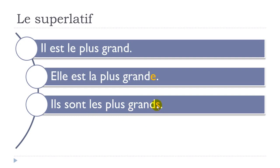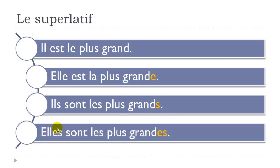For 'the least': il est le moins grand, elle est la moins grande, ils sont les moins grands, elles sont les moins grandes. Exactly the same rule as le plus — the article agrees with the subject, and the adjective takes the appropriate gender/number ending.